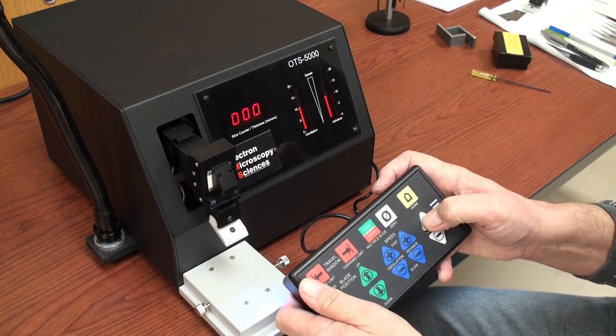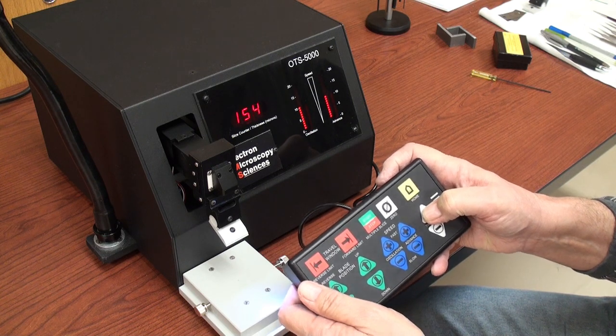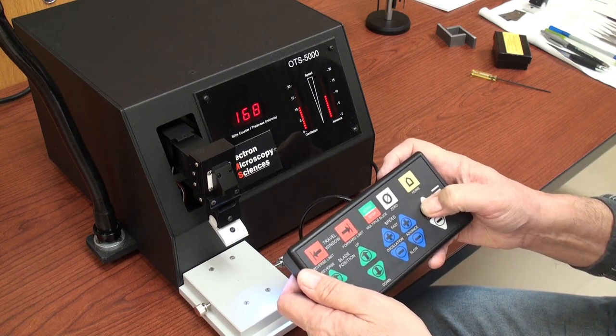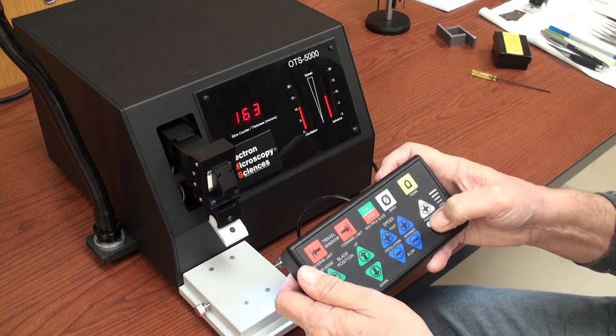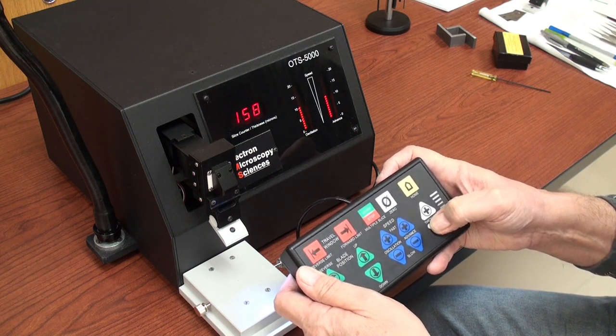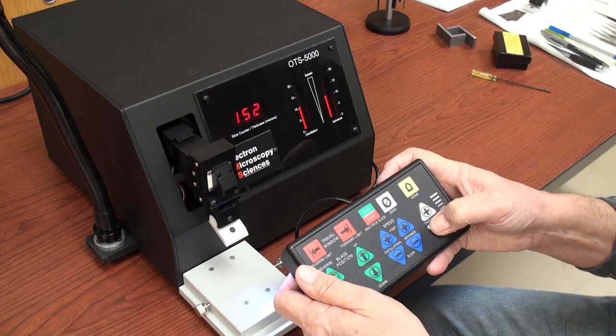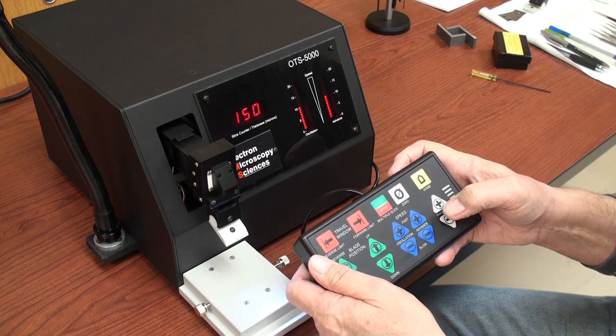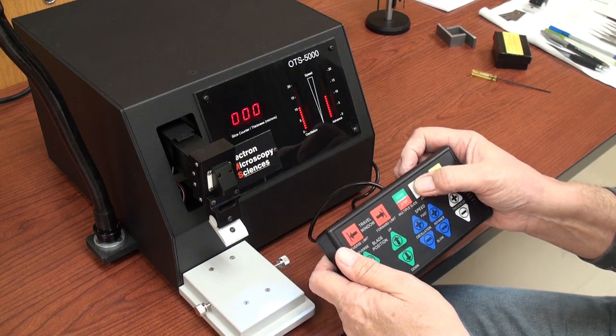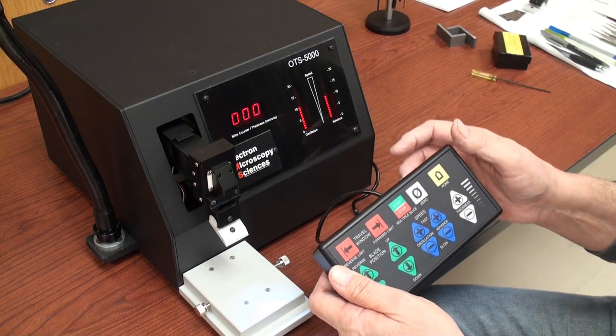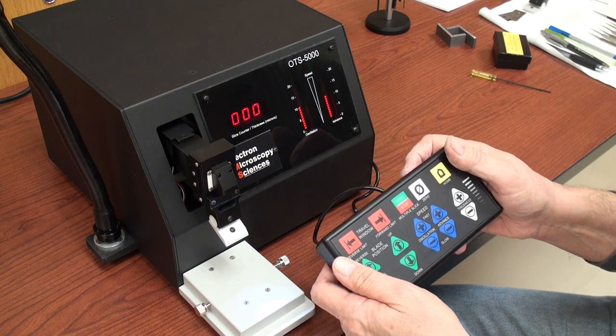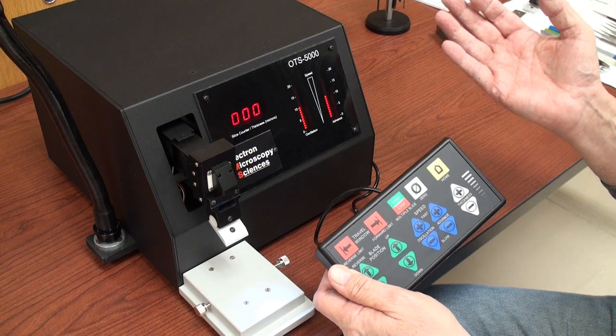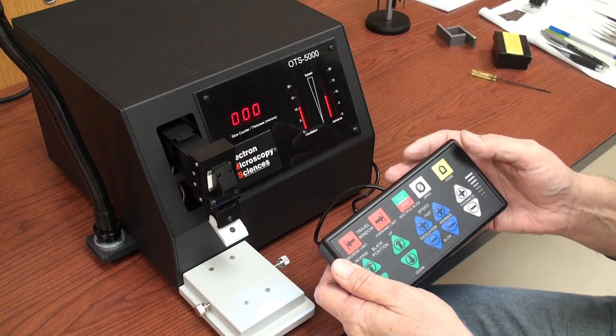This adjusts your thickness. Currently incrementing up to somewhere in the middle 160 micron range. Let's just leave it at 150. Zero zeroes out the section counter. So it tells you how many sections you've taken at 150 microns.